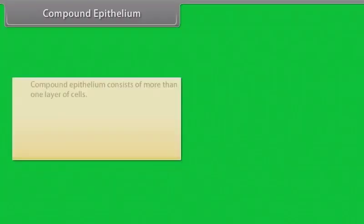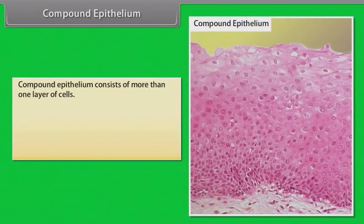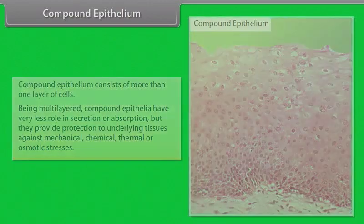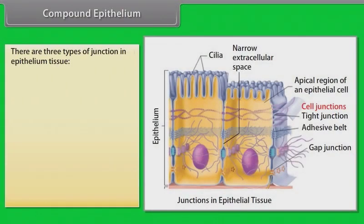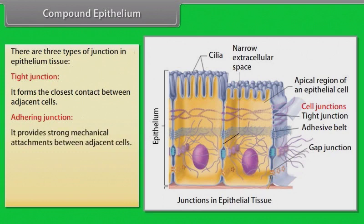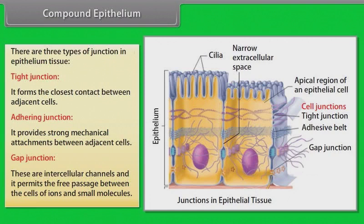Compound epithelium consists of more than one layer of cells. Being multilayered, compound epithelia have very little role in secretion or absorption, but they provide protection to underlying tissues against mechanical, chemical, thermal, or osmotic stresses. There are three types of junctions in epithelial tissue: tight junction, which forms the closest contact between adjacent cells; adhering junction, which provides strong mechanical attachments between adjacent cells; and gap junction, which are intercellular channels that permit the free passage of ions and small molecules between cells.